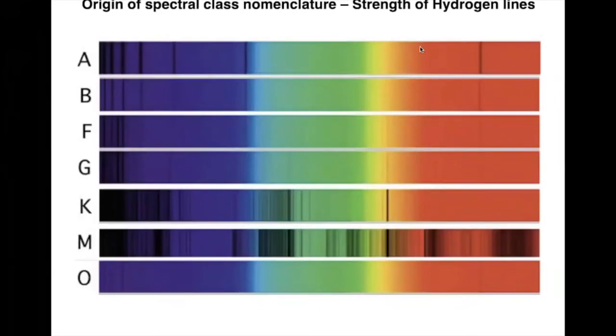These are these ones here. So what you're looking at here are H-alpha, H-beta, H-gamma, H-delta, the spectral lines of hydrogen. So they rank them accordingly to that.